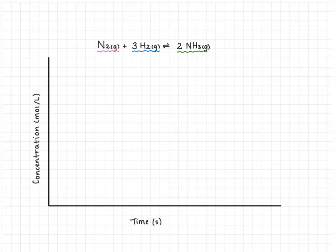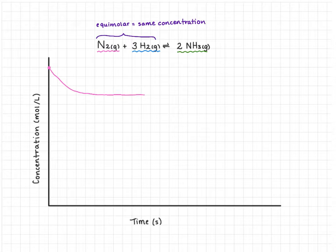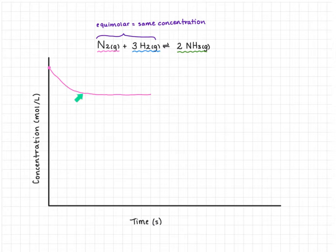We're going to assume that we start out with equimolar concentrations of nitrogen and hydrogen — equimolar means the same concentration. On our graph, nitrogen starts here and its concentration begins to decrease over time, leveling off. Initially we have a high concentration of reactant so the rate is fast, but as we use up the reactant the rate slows down and the change in concentration levels out.